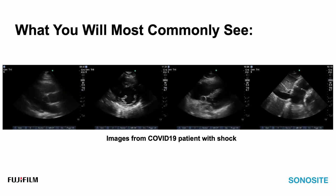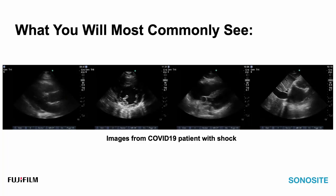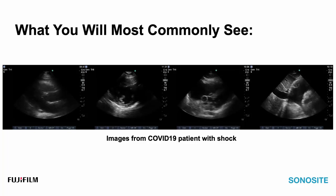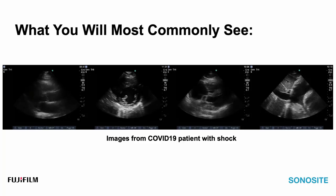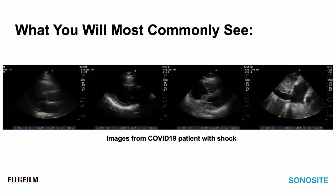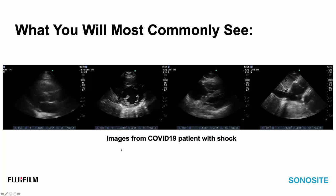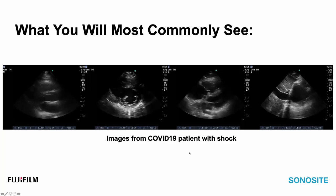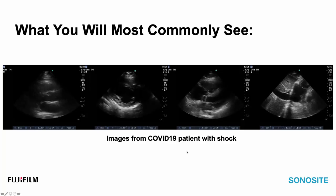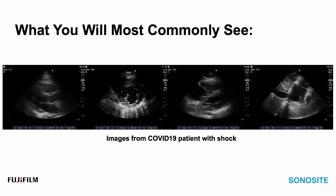So what will you see instead on echo? You'll see something largely normal or possibly even hyperdynamic — we have the parasternal long, parasternal short at the papillary muscle level, the subcostal four-chamber, and the IVC. These are real images from real COVID patients, so this is not laboratory-quality imaging; however, for the most part there's not a lot in the way of actionable findings. If you're new to interpreting these findings, that's what we're going to spend the rest of the screencast drilling down on.